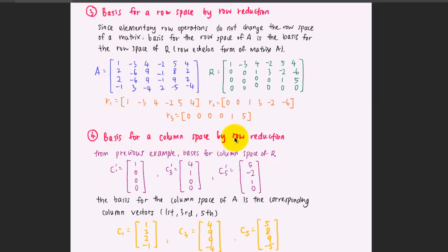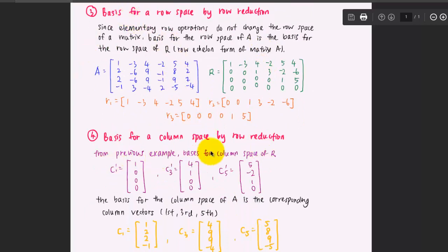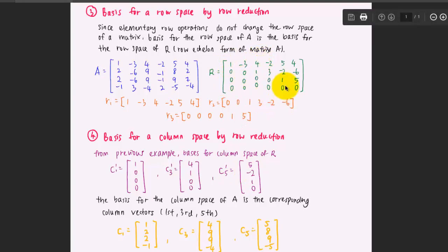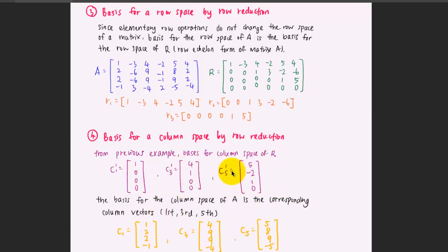The fourth aspect is finding the basis for the column space by row reduction. Because elementary row operations do change the column space, we cannot use the column vectors of R as the basis for the column space of the original matrix A. From the previous example, the basis for the column space of R corresponds to the first, third, and fifth pivot columns. To find the basis for the column space of A, we refer back to the original matrix and take the corresponding first, third, and fifth columns. These original column vectors are the basis for the column space of the original matrix A.